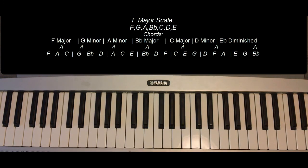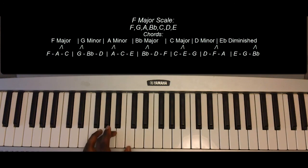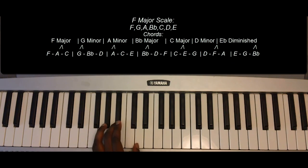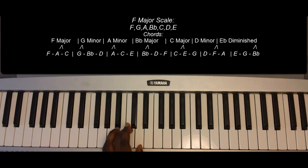The triads in the F major scale are as follows: F major — F, A, C. G minor — G, Bb, D. A minor — A, C, E.